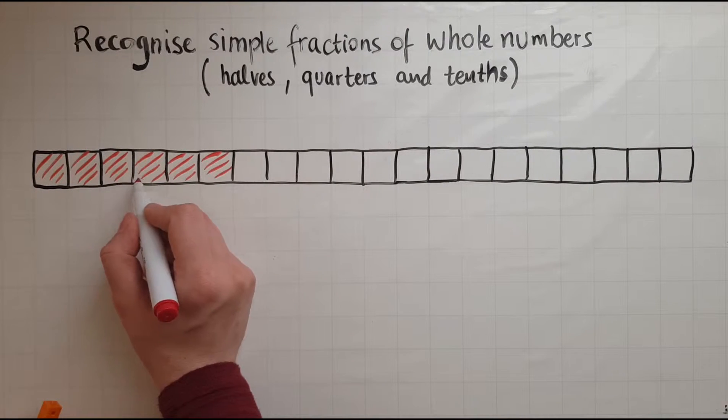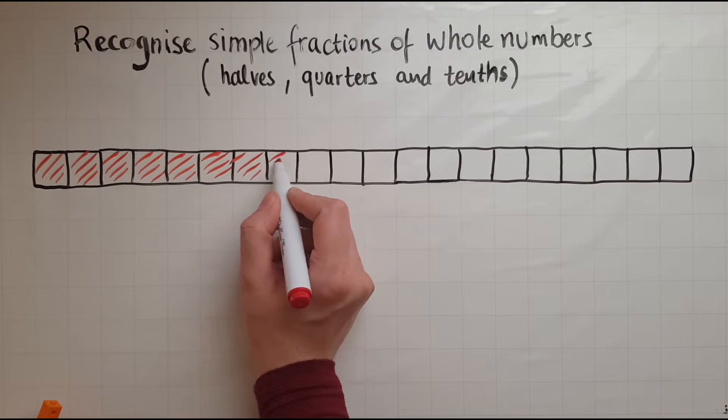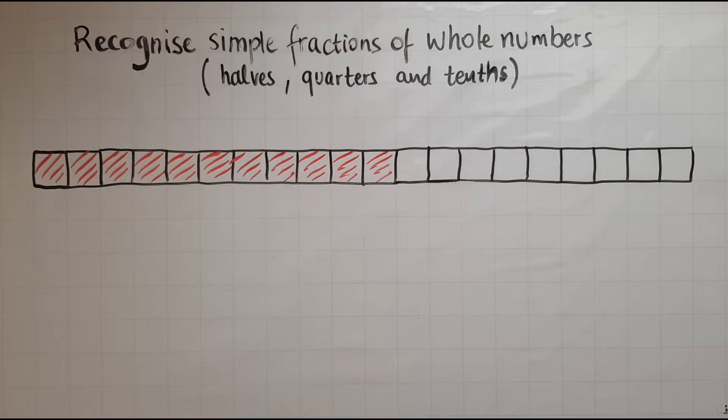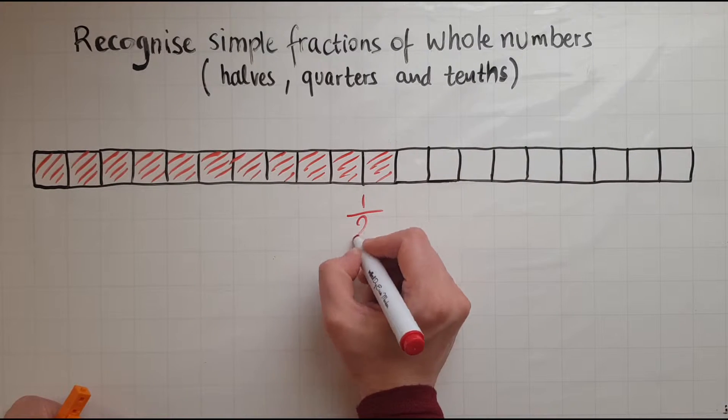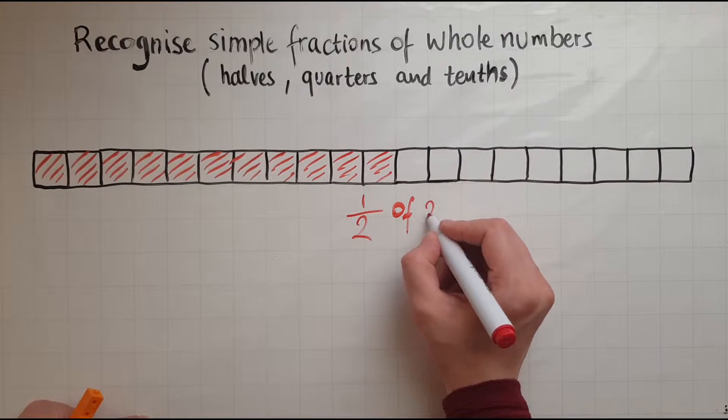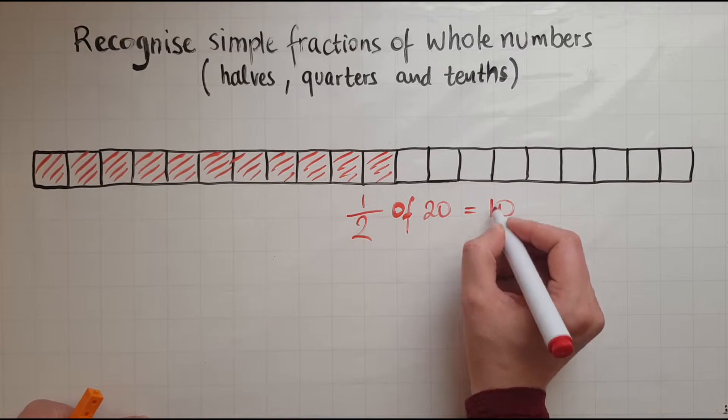So we've got 3, 4, 5, 6, 7, 8, 9, 10. So this is one half. So one half of 20 is equal to 10.